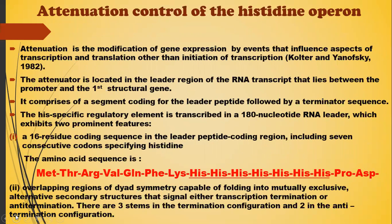Regarding attenuation control of the histidine operon: attenuation is the modification of gene expression by events that influence aspects of transcription and translation other than initiation of transcription, as mentioned by Kolter and Yanofsky in 1982. The attenuator is located in the leader region of the RNA transcript that lies between the promoter and the first structural gene. It comprises a segment coding for the leader peptide followed by a terminator sequence. The histidine-specific regulatory element is transcribed into a 180-nucleotide RNA leader which exhibits two prominent features.